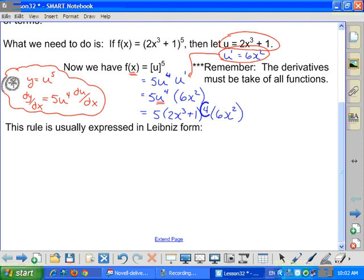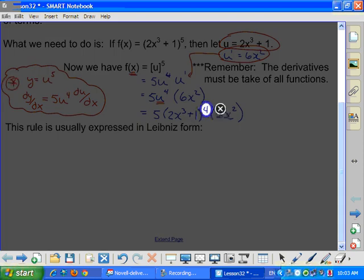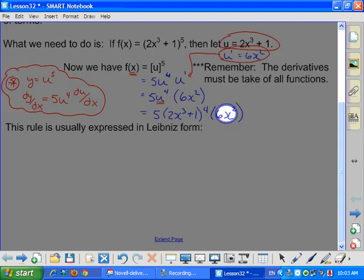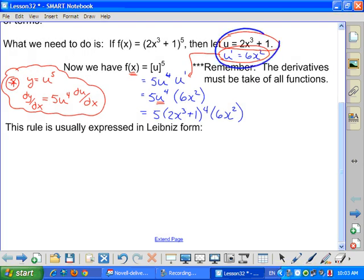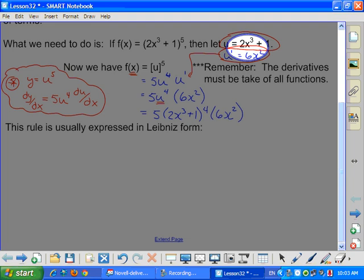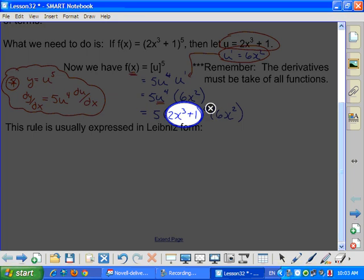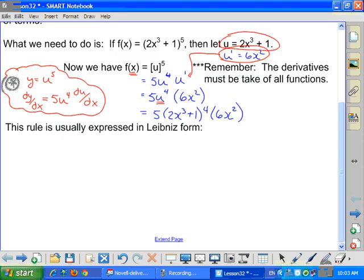Where did the 6x² come from? 6x² is the derivative of what was inside the brackets. So it's just the 2x³ + 1, the derivative of that is the 6x². So that is your power rule.